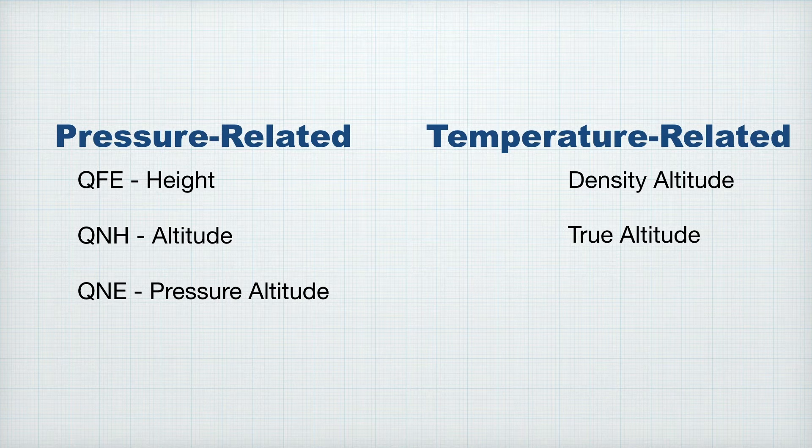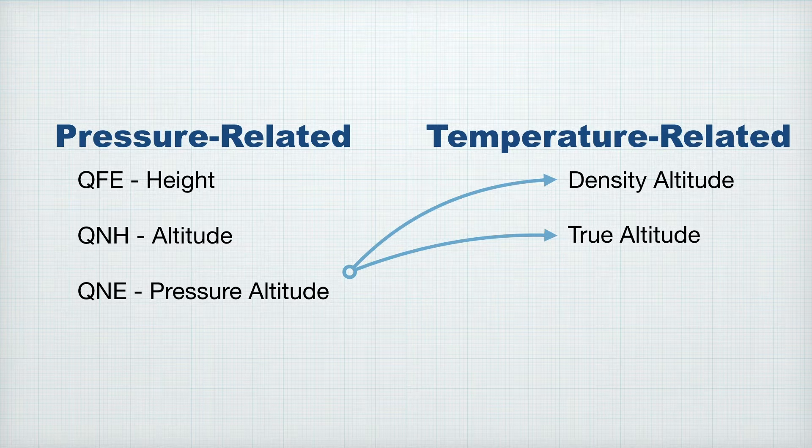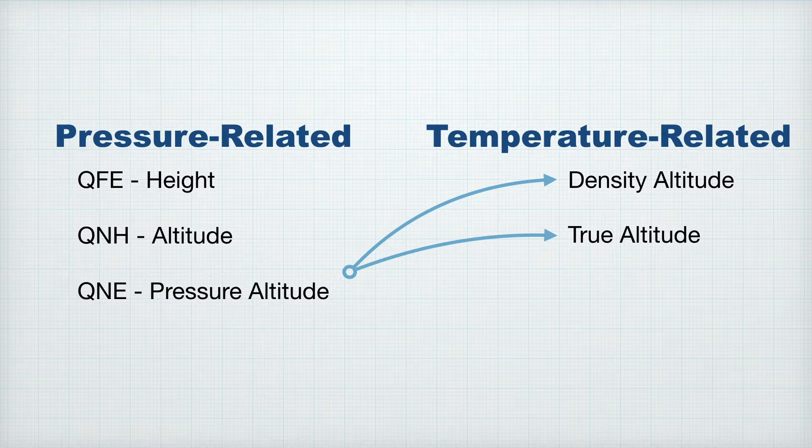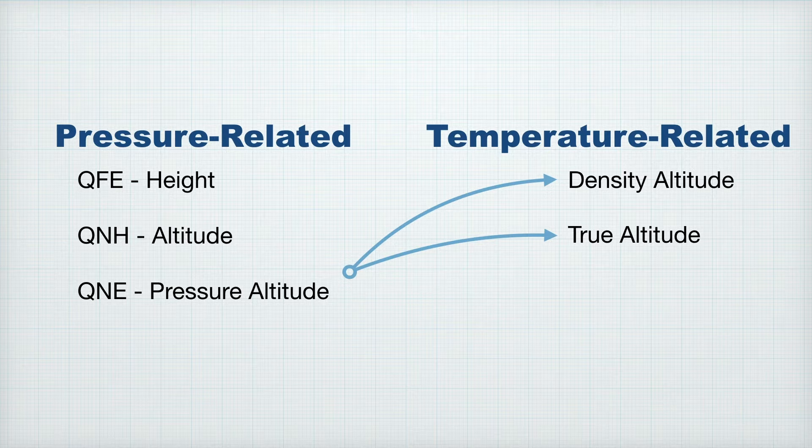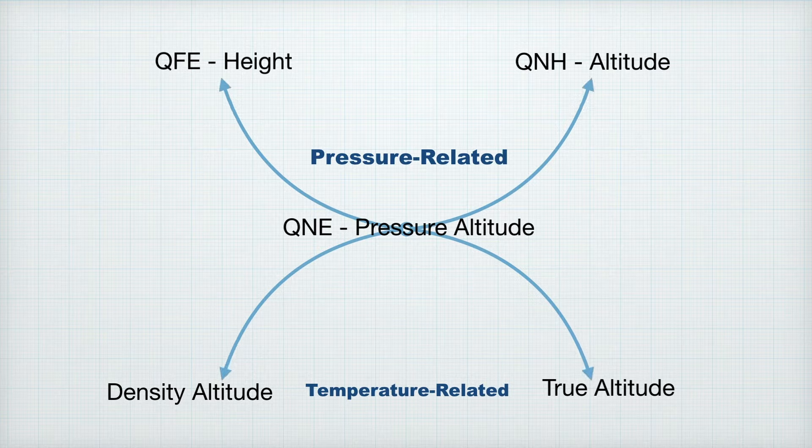Both density altitude and true altitude are adjustments made to the pressure altitude, although with true altitude it isn't quite that straightforward. You're almost definitely going to be asked to find a true altitude having been given a QNH or a QFE, so think of the QNE pressure altitude as the medium between them. A flow like this might actually be kind of useful.